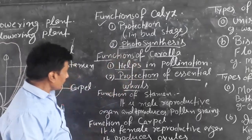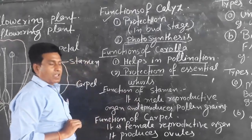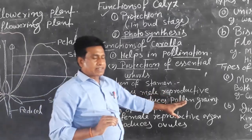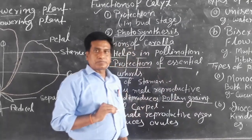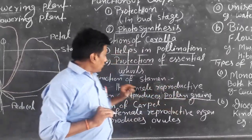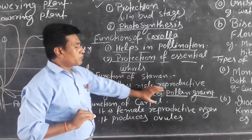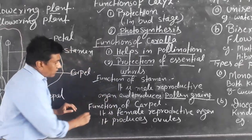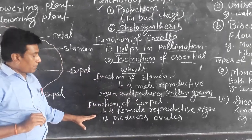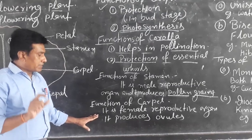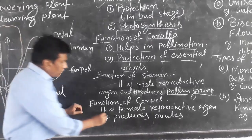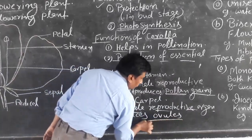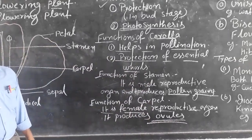The function of stamen: stamen is the male reproductive organ and it produces pollen grains. Pollen grain is the male gamete. Stamen produces pollen grains because stamen has an anther, and inside the anther pollen grains are produced. The function of carpel: carpel is the female reproductive organ of the flower and it produces ovules. Ovule is the female gamete.